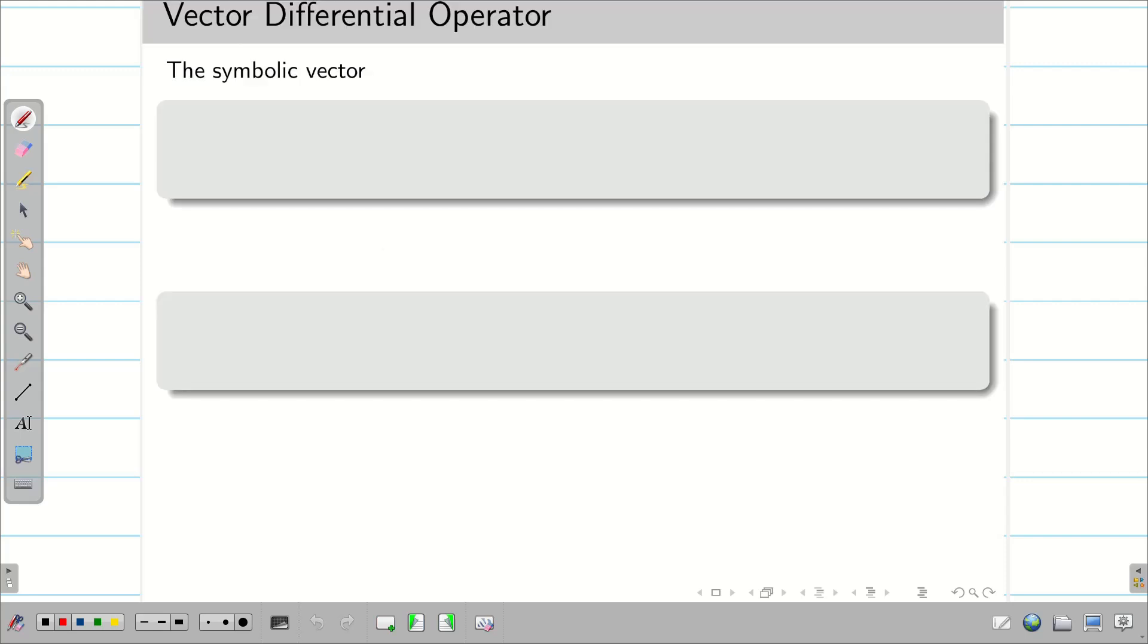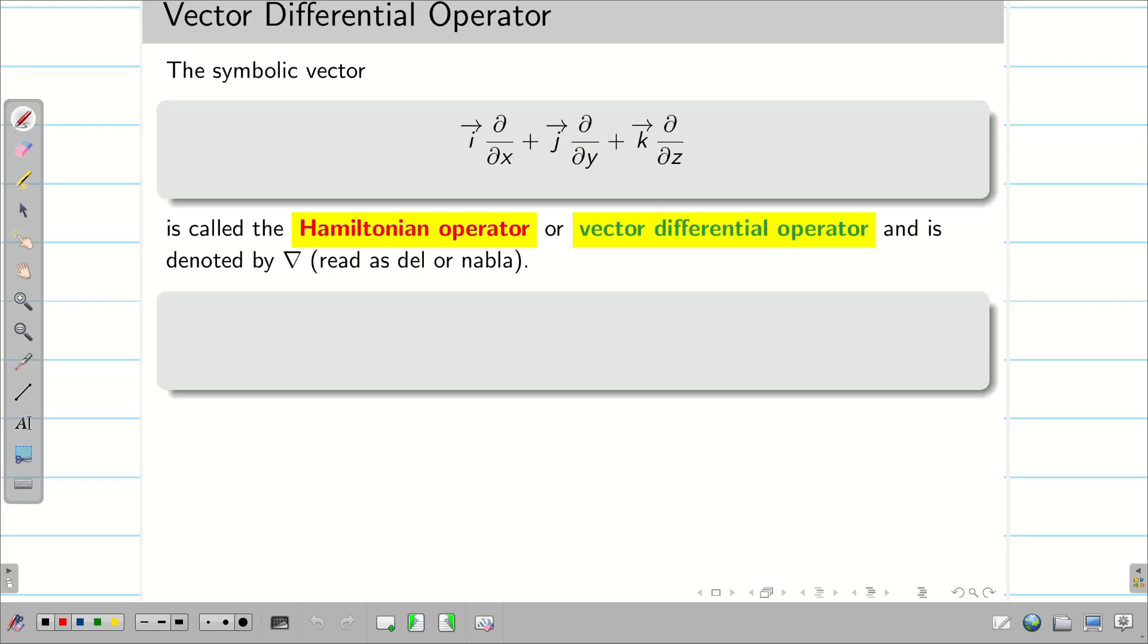Next, we are going to see a very important definition for vector calculus. Vector differential operator: i vector del by del x plus j vector del by del y plus k vector del by del z. It is known as Hamiltonian operator or vector differential operator. We can represent this by del. People say it as del or nabla. Simply we are going to call it del operator.